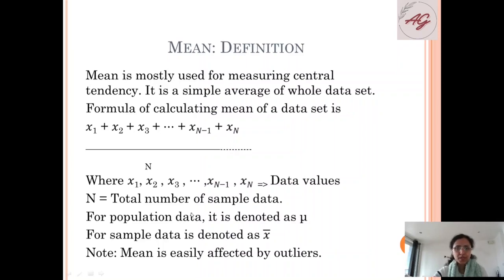For population data, which we understood in our last course, it is denoted as μ (mu). For sample data it is denoted as x̄ (x bar). Note: mean is easily affected by outliers. We will move on and understand more about this.